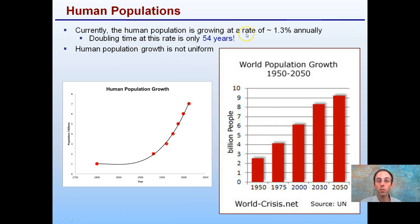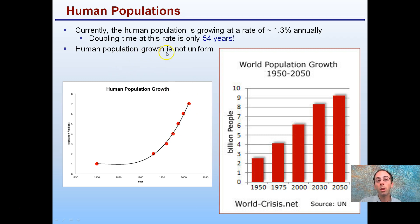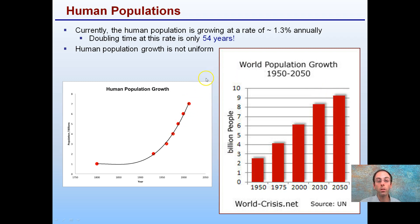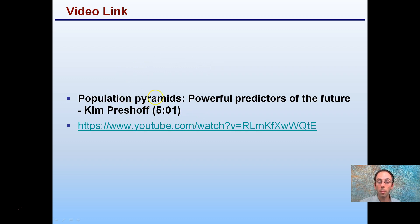Currently the human population is growing at about 1.3 percent annually. The doubling time is only about 54 years, which can be a little scary when we get into this exponential curve. Exponential curves tend to reach some sort of carrying capacity, but right now we have no indication of that. Human population growth is not uniform, so it's important to keep that in mind — growth is different in different regions of the world. This is an expansion or prediction of what's going to happen in the future. It's a great video link if you're looking at population pyramids and predicting the future — about a five-minute video I recommend you watch.